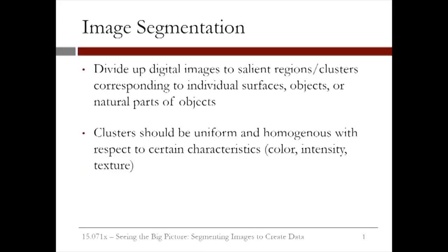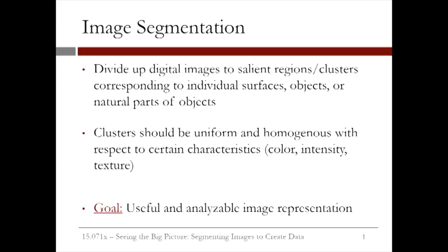Image segmentation is the process of partitioning digital images into regions or segments that share the same visual characteristics, such as color, intensity, or texture. These segments should also be meaningful — they should correspond to particular surfaces, objects, or even parts of an object. Think of having an image of a water pond, a mountain chain in the backdrop, and the sky. Segmenting this image should ideally detect the three different objects and assign their corresponding pixels to three different regions. In few words, the goal of image segmentation is to modify the representation of an image from pixel data into something meaningful to us and easier to analyze.